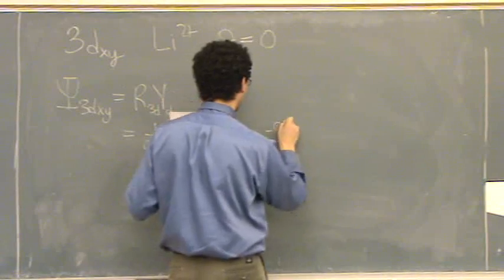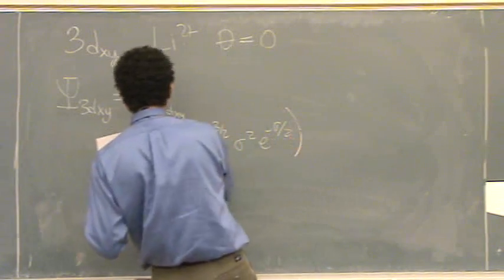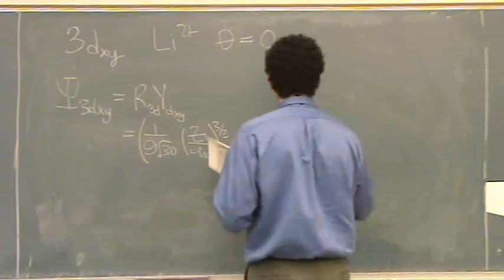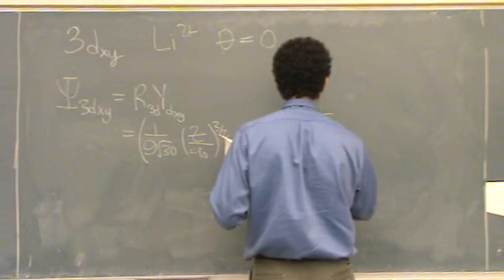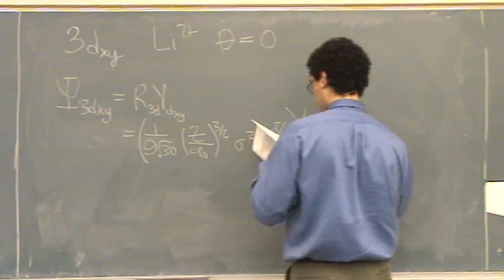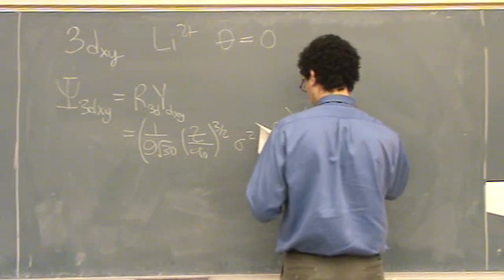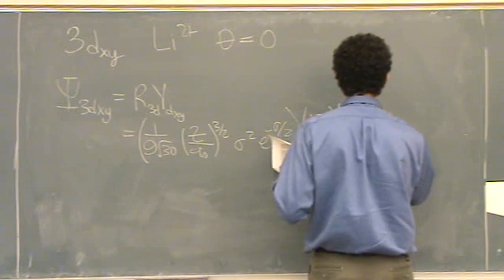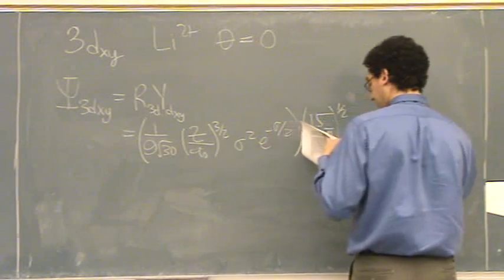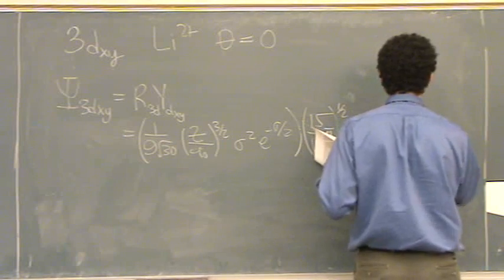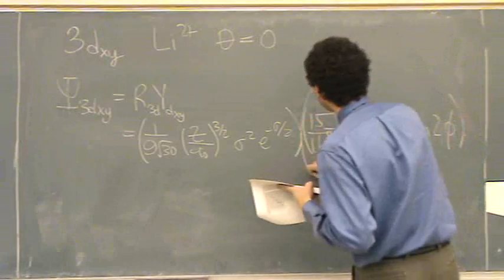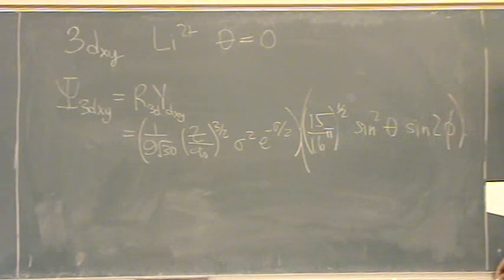This is the r part right there, and now the y part. It's 15 over 16 pi to the 1 half sine squared theta times sine 2 phi. There's the y part.